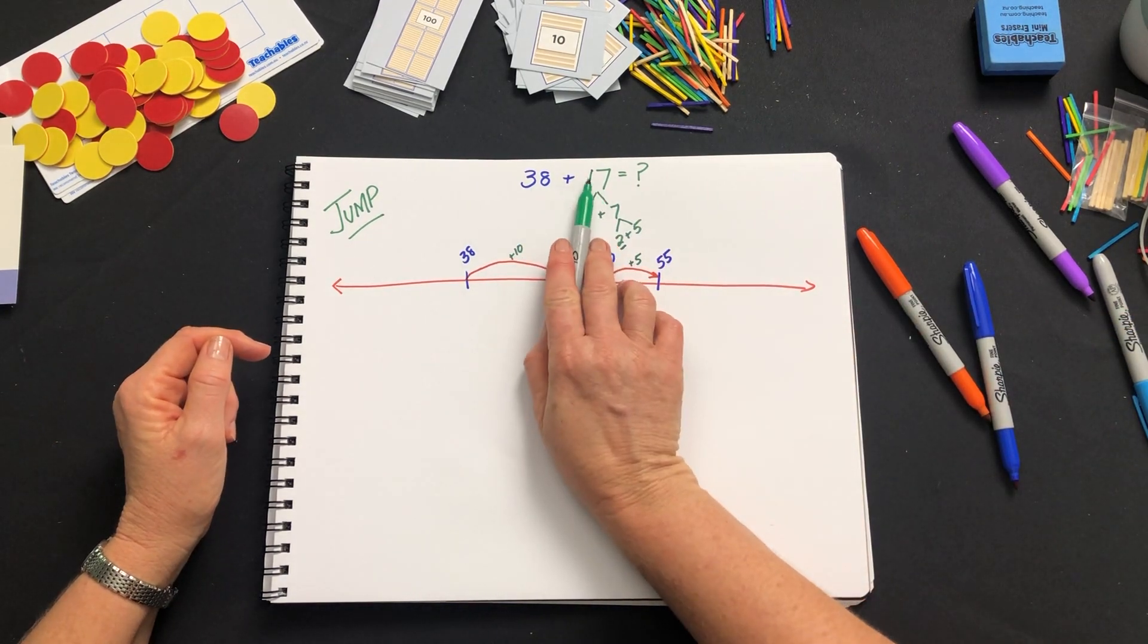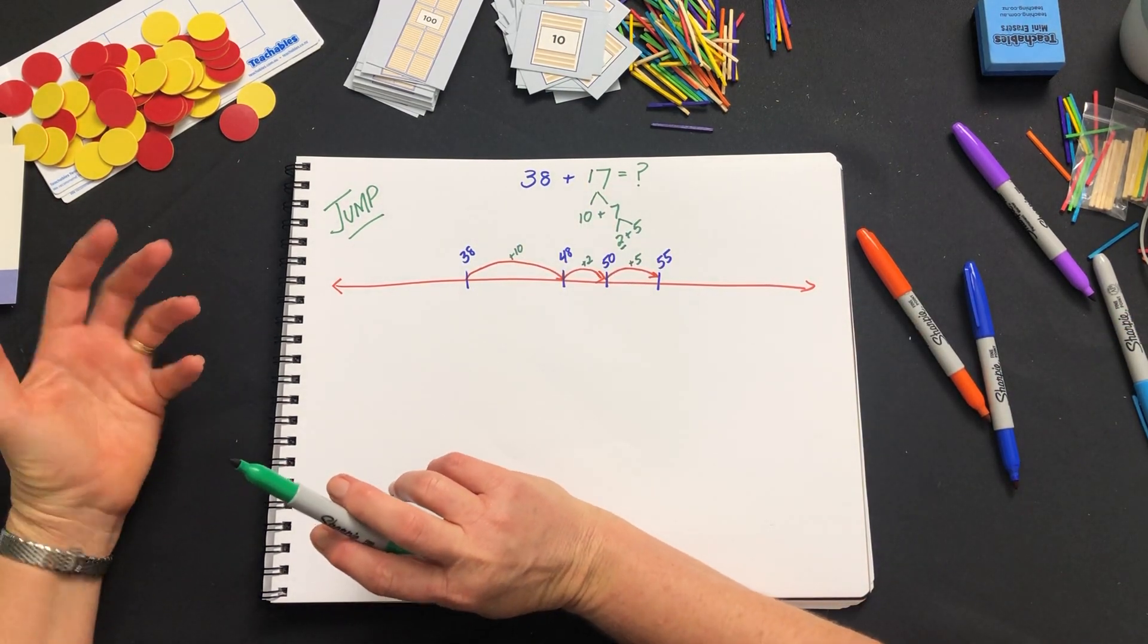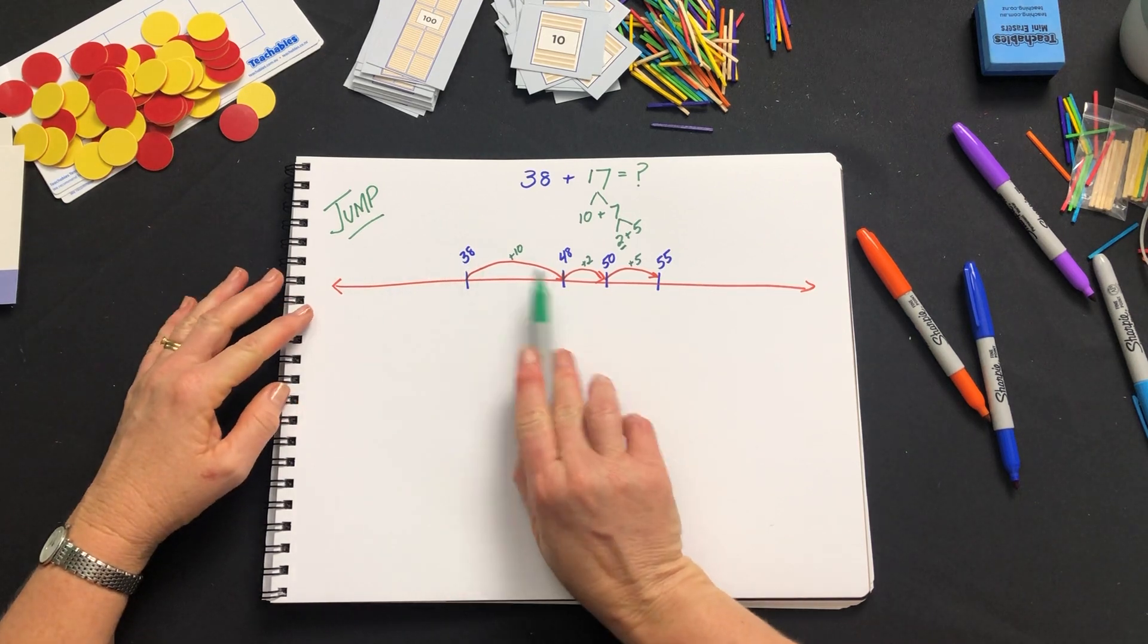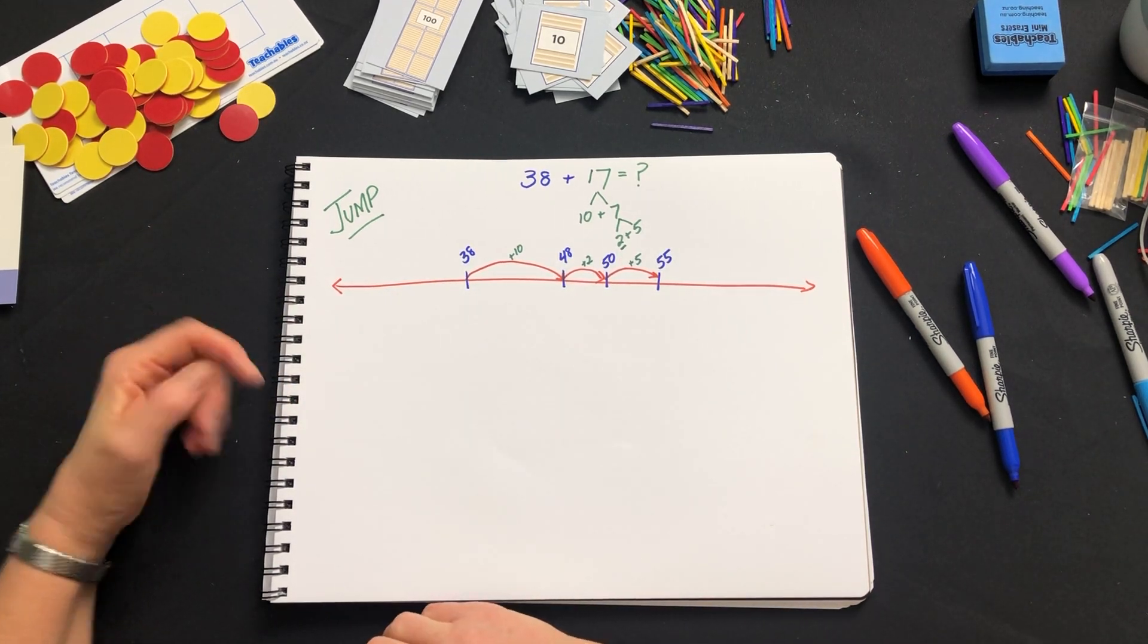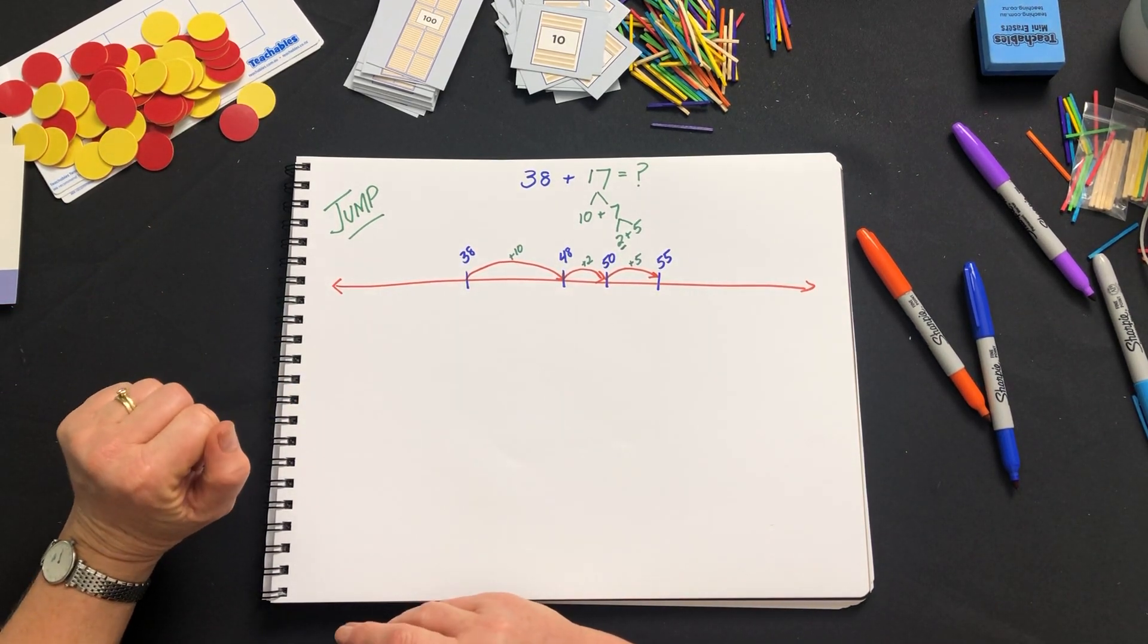So we broke down 17, we call it partitioning, to get me to significant place value points that make it easier for me to add the numbers together.